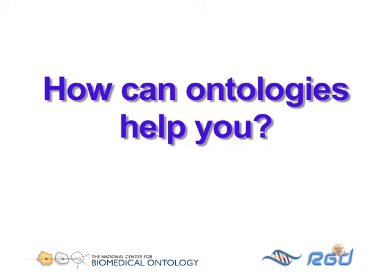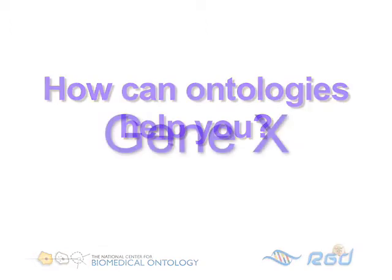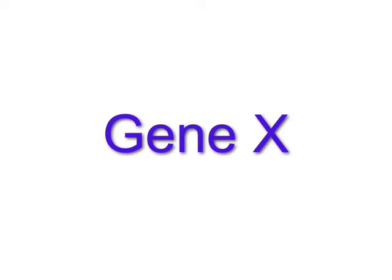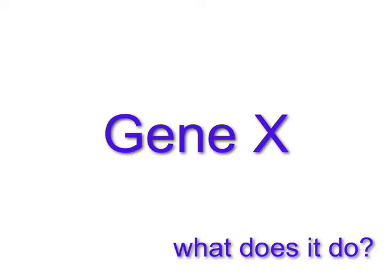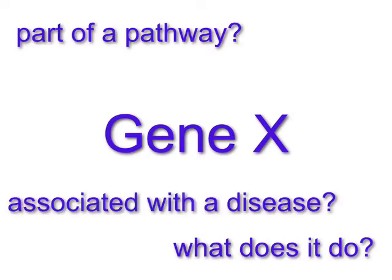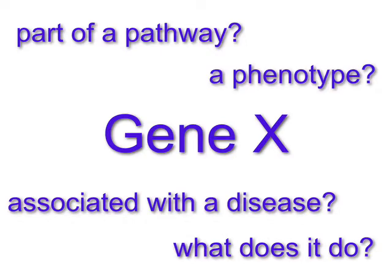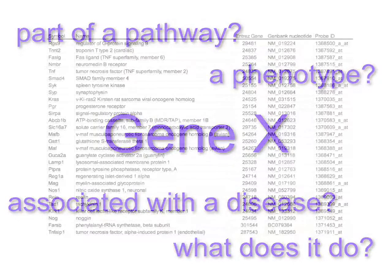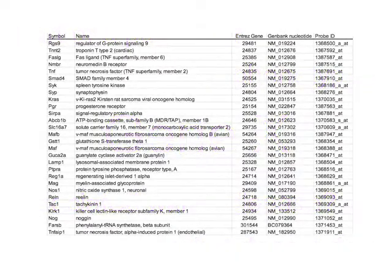Suppose you need information about a particular gene of interest, such as what it does, if it's part of a pathway, or if it's associated with a disease or phenotype. Or suppose that you've done some microarray experiments. Now you have a list of genes and need to know if they share any attributes.